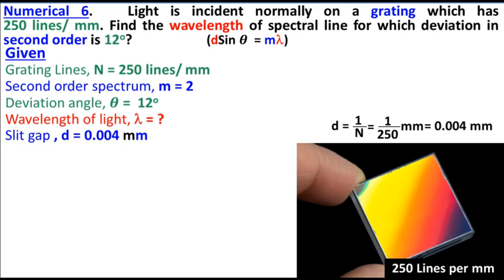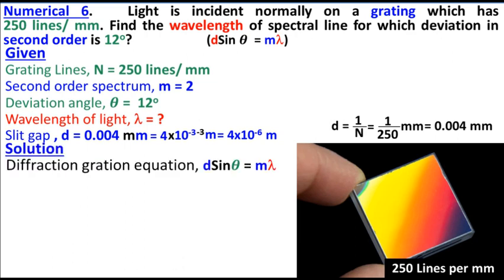If we convert 0.004, we write this as 4 into 10 to the minus 3 millimeters, and then 4 into 10 to the minus 6 meters.